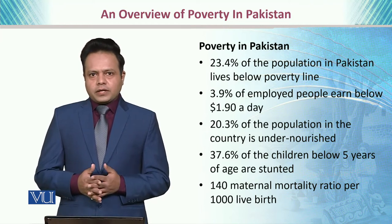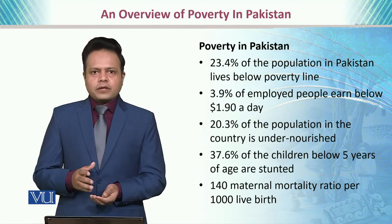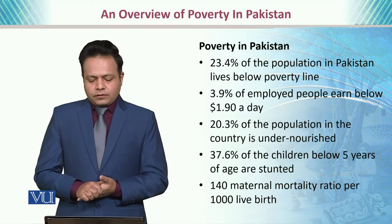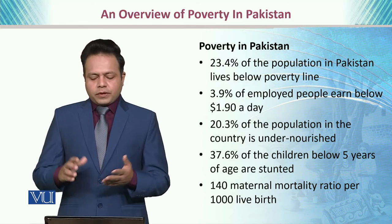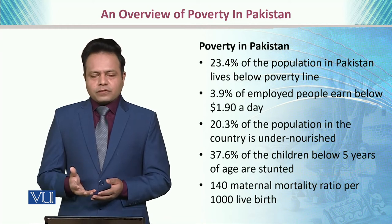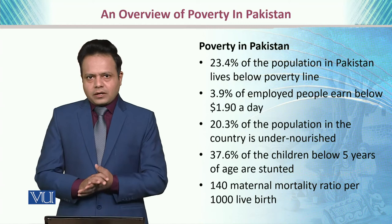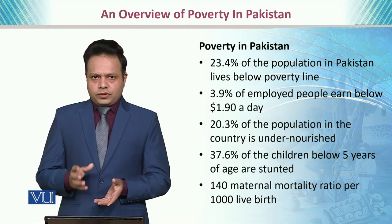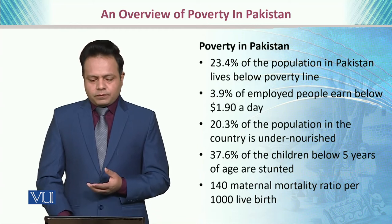37.6% of children below the age of 5 years are stunted — they are not adequately growing and are having physical disabilities. Additionally, 140 maternal mortality rates per 1,000 live births are also a cause of concern. All these statistics reflect a pretty dangerous situation regarding poverty in Pakistan.